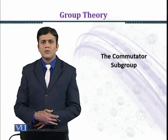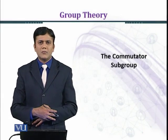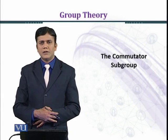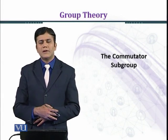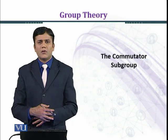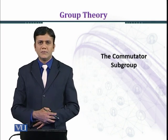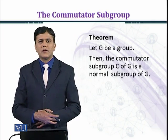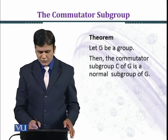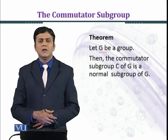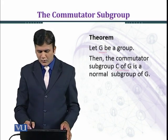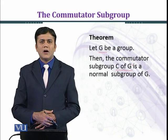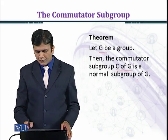In this module, we shall prove that the commutator subgroup of G, which is denoted by C, is a normal subgroup of G. Let's state the theorem. Let G be a group, then the commutator subgroup C of G is a normal subgroup of G.